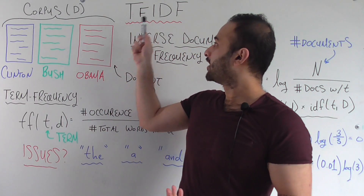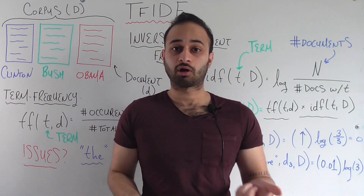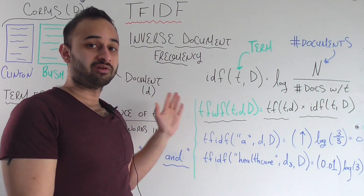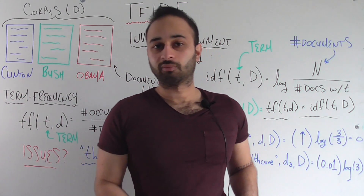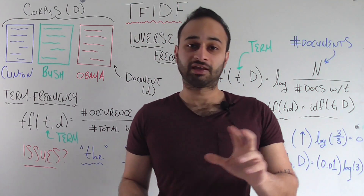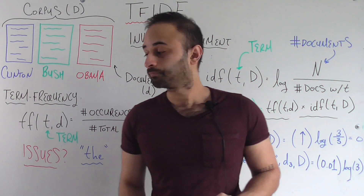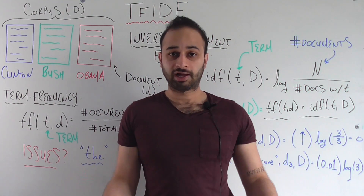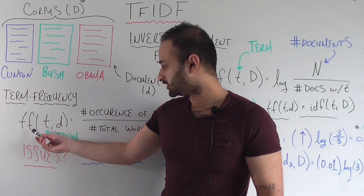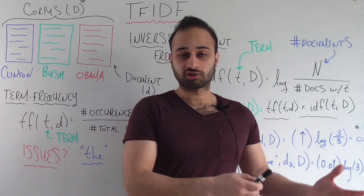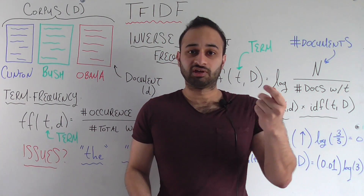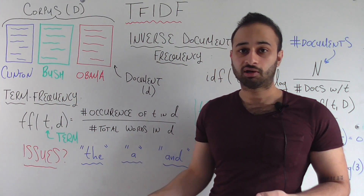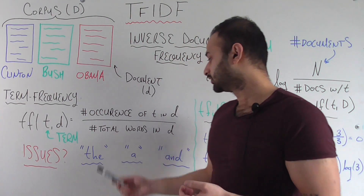TF-IDF is literally a multiplication of two metrics: the first one called TF, which is term frequency, and the other called IDF, which is inverse document frequency. Let's build the story from the ground up — let's first look at term frequency alone, see what that gives us, and see what it does not give us. Term frequency could not be simpler. The general idea is that the term frequency of a given term in any of these documents is simply the number of occurrences of that term in the document divided by the number of terms in the document overall.